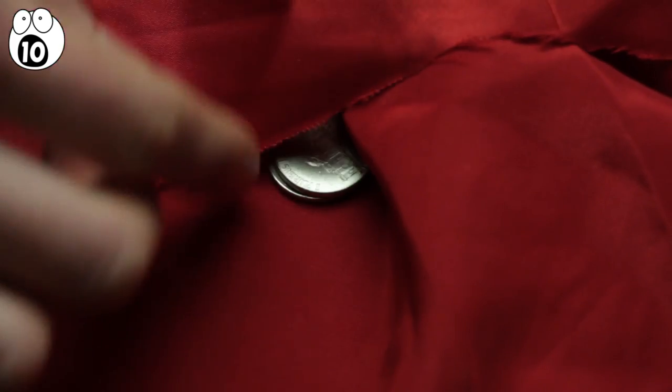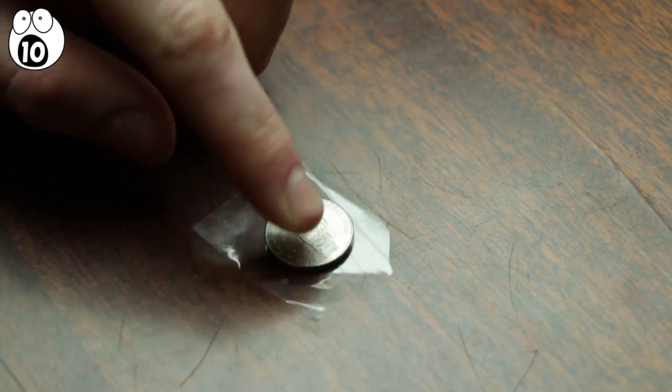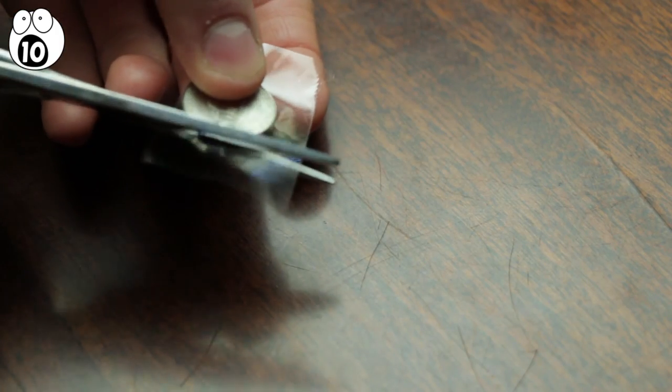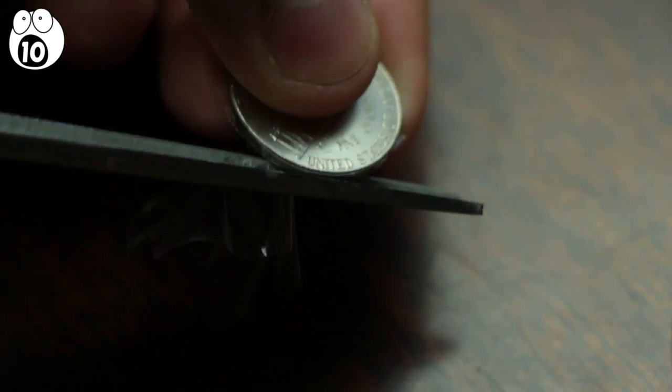To perfect this trick, you'll have to stop those coins from making noise in the hanky, and there's a straightforward way to do this. Simply coat them in clear tape on both sides and they'll be nice and quiet.